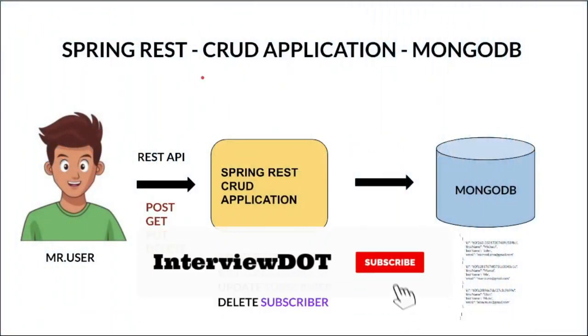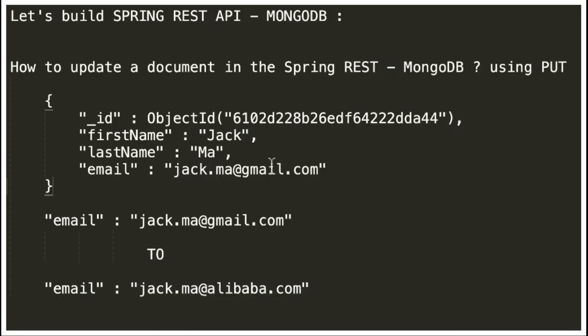Hi friends, welcome to the Spring REST application series. In this video I'm going to talk about how to update a document using the PUT HTTP method. We have already seen how to create a document and how to retrieve a document using REST API. Now I'm going to talk about how to update a document using PUT HTTP method. For example, there is a document and I want to update the email from Gmail to alibaba.com.